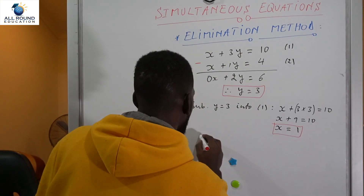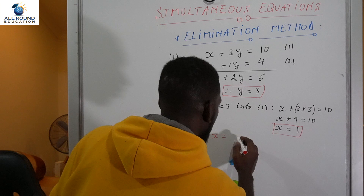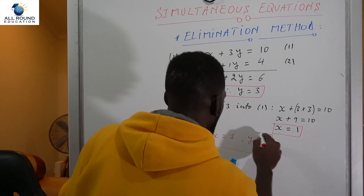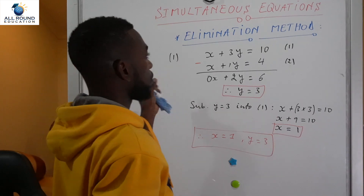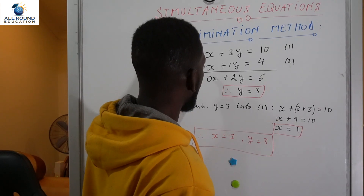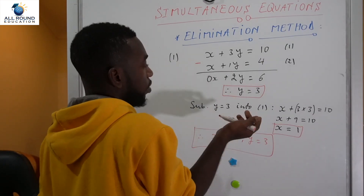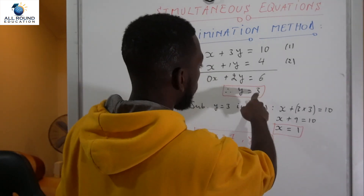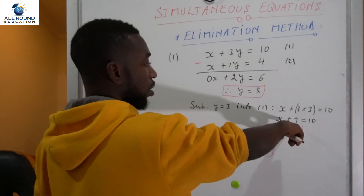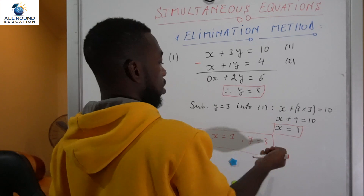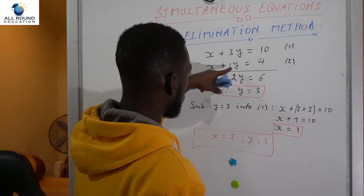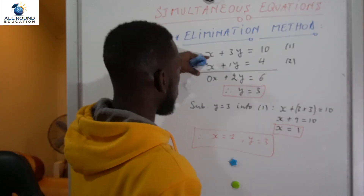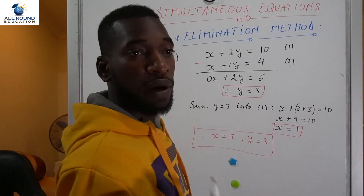We can now conclude: x equals 1 and y equals 3. So we eliminated the variable x by subtracting the equations, solved for y equals 3, then substituted back to get x equals 1. You can check: 1 plus 1 times 3 equals 1 plus 3 equals 4, which matches the second equation. Let's move on to the next example.